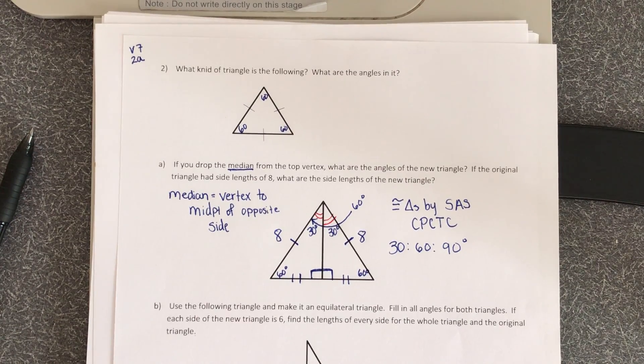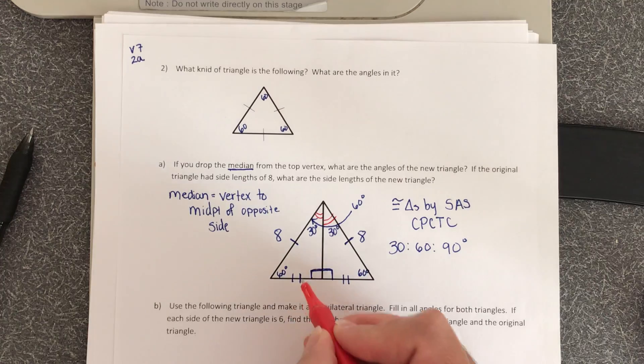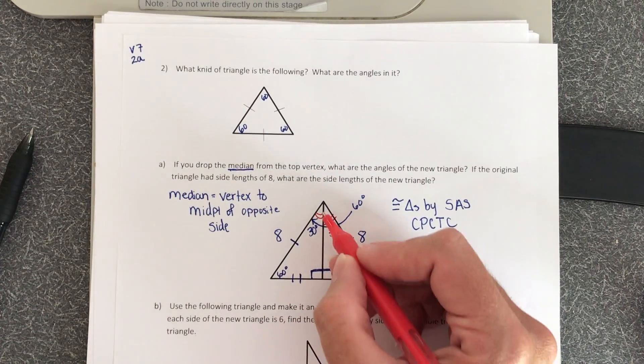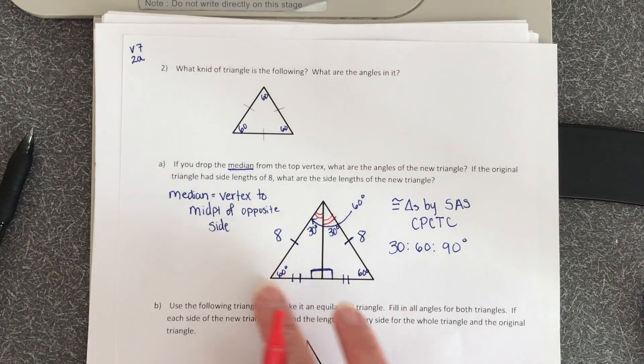What are the side lengths of the new triangle? In other words, what is this side length and this length of this median that we dropped down? Well, let's start with this segment here.